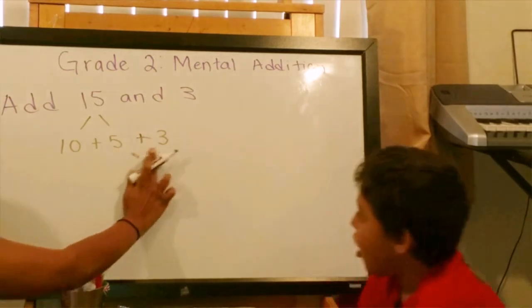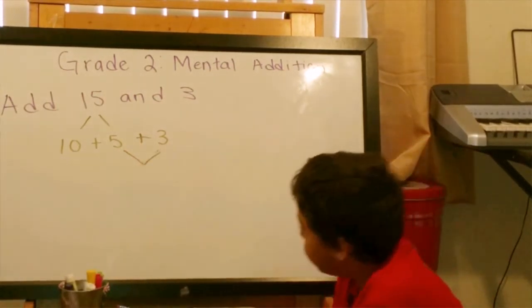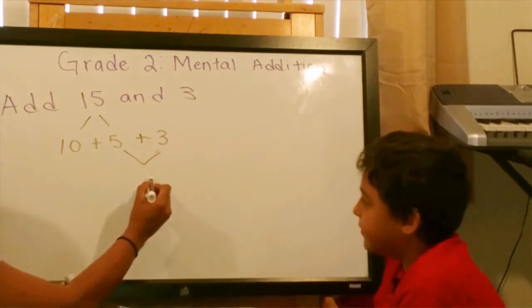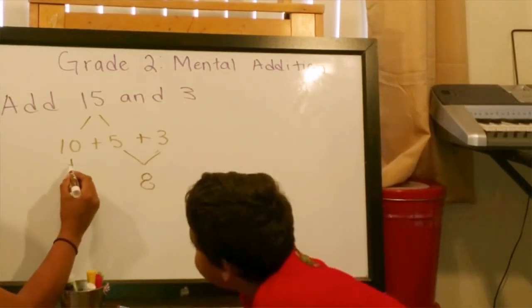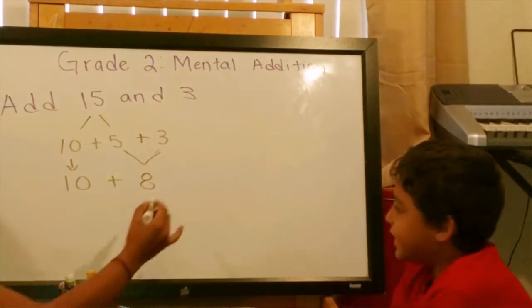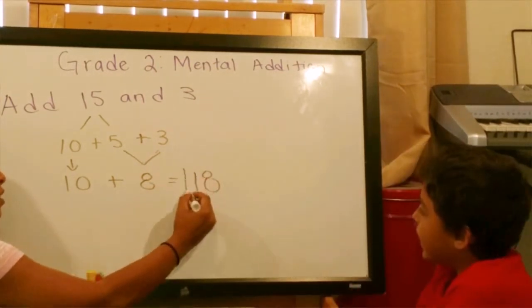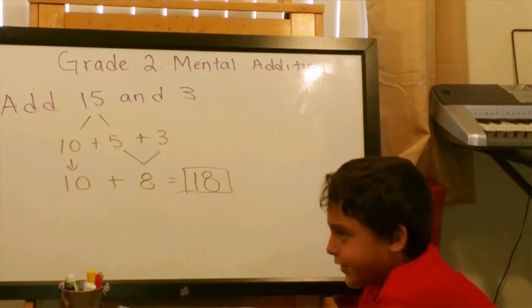We'll add all the ones in the ones place together. So, five plus three equals eight. And ten plus eight equals eighteen. And eighteen is your answer.